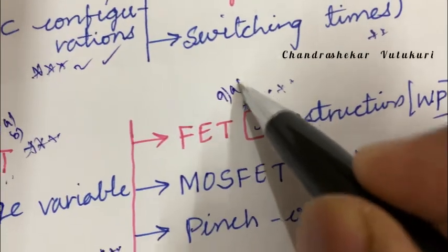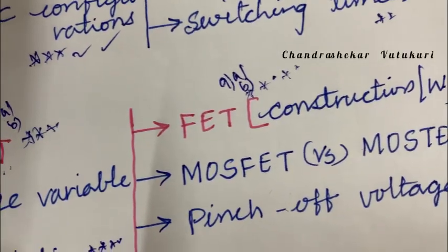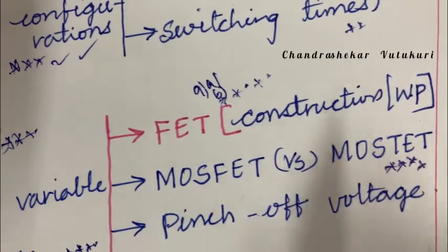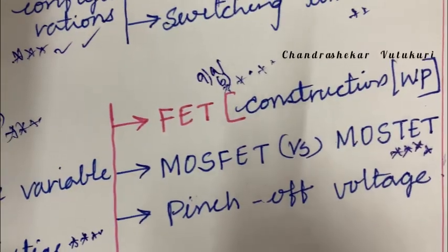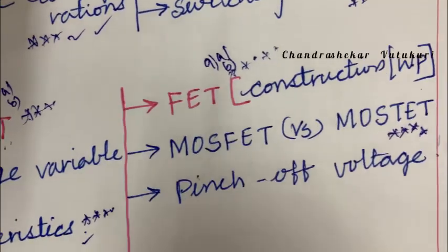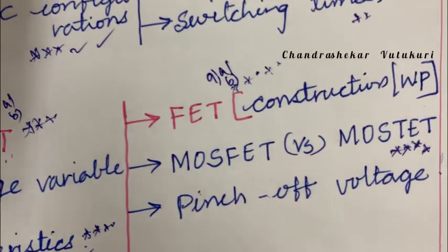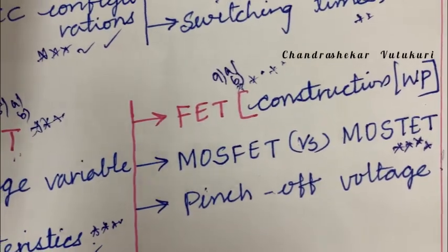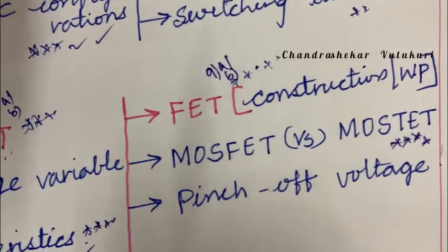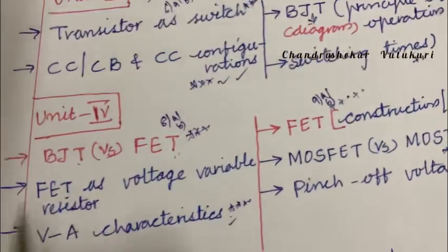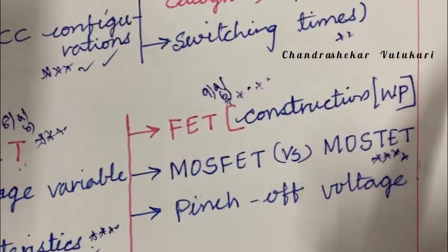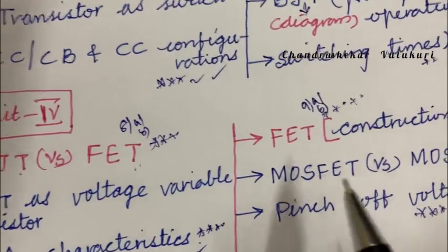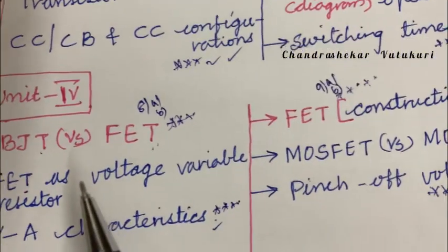FET construction and working principle along with its neat sketch is the topmost question in 9A or 9B. Wherever problems are given, work them out as well. MOSFET and the difference between MOSFET types — or individually — may appear as short or long questions. Since no specific short question is highlighted here, you are supposed to work out the complete unit so you can answer both short and long answers. Pinch-off voltage may be a short question for one mark in Unit 4, covering question numbers 8 and 9.